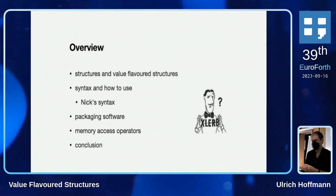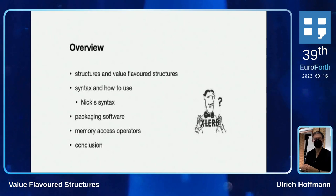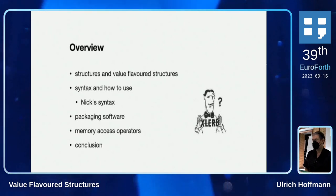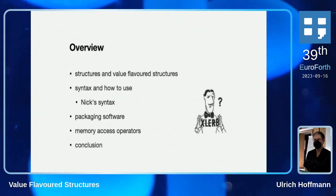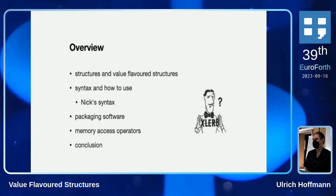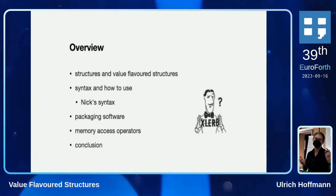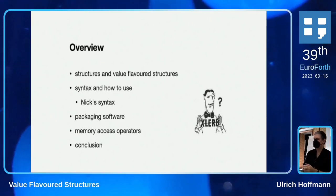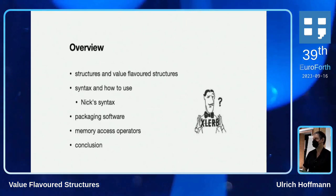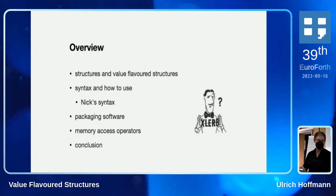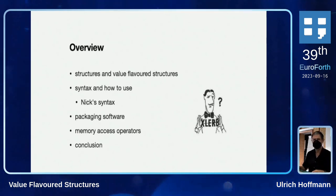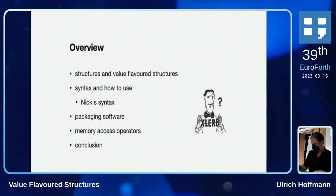I'll talk a little bit about the experiences I have. Value-flavored structures will have different kinds of sizes and different ways to access memory, so they are based on memory access operators. It turns out we don't have agreement on how they look: VFX uses this one, gForth uses that one, SwiftForth uses these kinds of operators. My implementation has lots of conditional compilation. It would be much better if we come to some agreement on what memory access operators would be, and luckily with the preceding Forth standards meeting we are on a good way to do so.